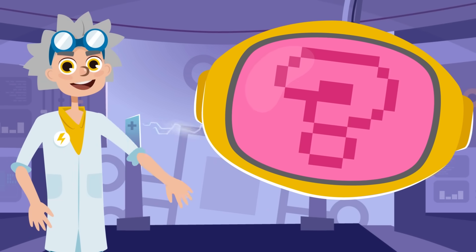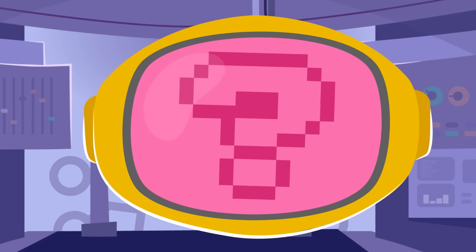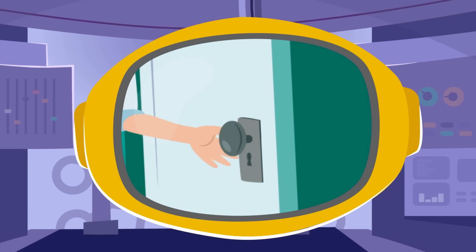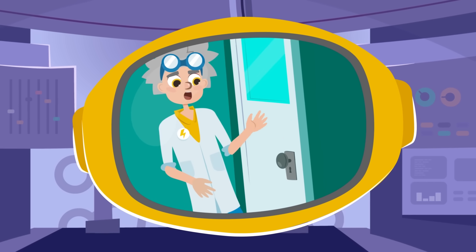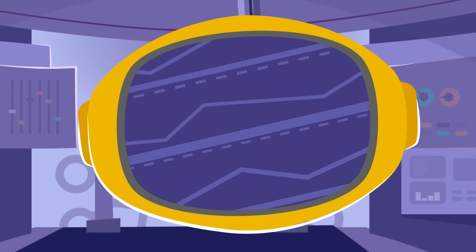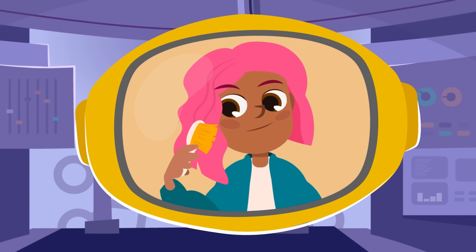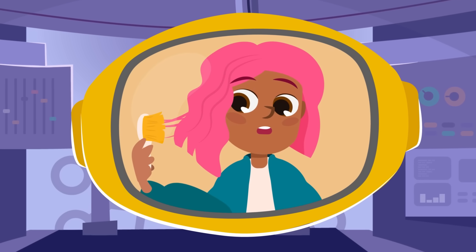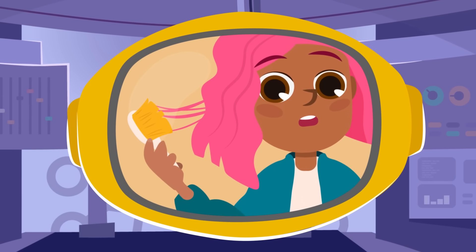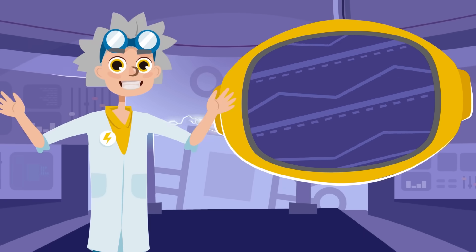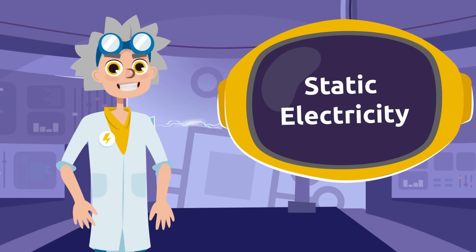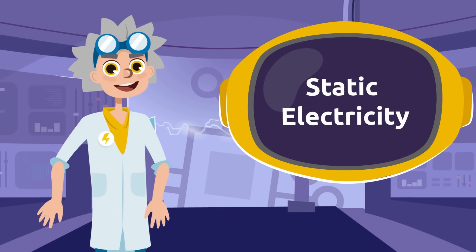Let's start with a couple of questions. Have you ever walked across a carpet and later felt a small shock when you touched an object? Have you ever brushed your hair for a while and noticed how it got stuck to your brush? Well, this happens because of static electricity, meaning that an electric charge is created when objects rub against each other.